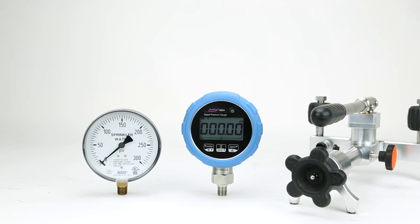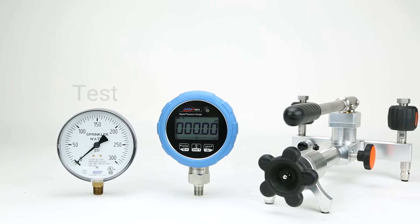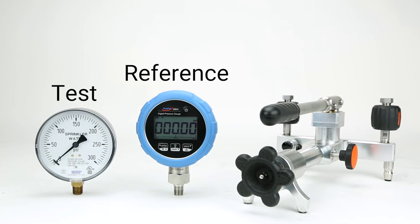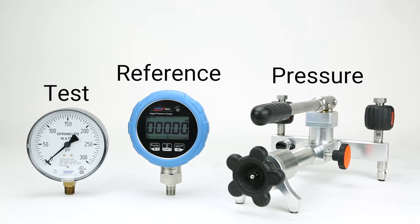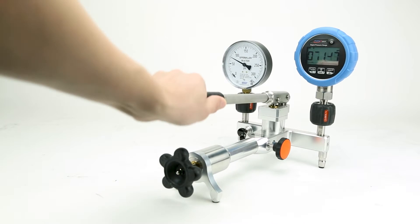To perform a pressure calibration, a technician needs three things: a device to test, a device to provide a reference, and a way to generate pressure. In this video we'll take a look at some of the equipment that accomplishes these functions as well as the applications that require them.